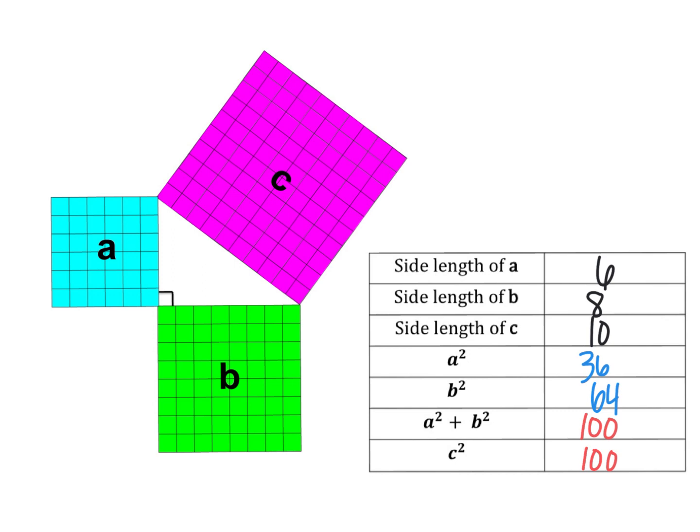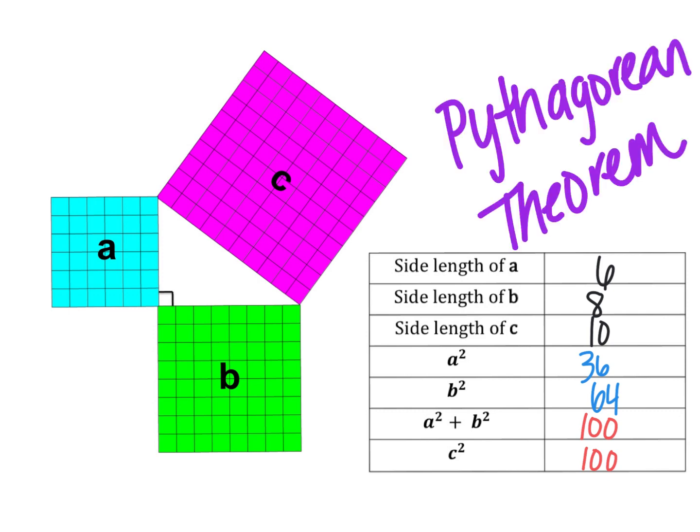When looking at the second example, you notice the same thing, that the side length of A squared plus the side length of B squared is equal to the side length of C squared. The relationship observed in both of these series of squares is called the Pythagorean Theorem. The Pythagorean Theorem explains the relationship between the three sides of a right triangle. Let's look at this in more depth.